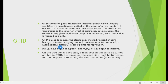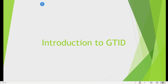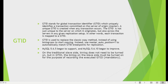Welcome to another MySQL replication tutorial. Today we'll be discussing a new feature introduced after MySQL 5.6 — GTIDs, which stands for Global Transaction Identifier. A GTID uniquely identifies a transaction committed to the origin server (master). A unique GTID is created when any transaction occurs, and it is unique not just to the server where it originated but also across all slaves or replicas.